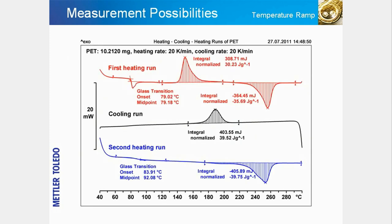Most DSC measurements are performed dynamically using a linear temperature ramp, where the sample is heated or cooled at a constant rate and the different states are measured as a function of temperature. The DSC curves in the slide show typical temperature scans of a sample of amorphous polyethylene terephthalate, or PET. The red curve shows the first heating run. The first event is the glass transition, seen as a step in the curve, followed by an exothermic cold crystallization peak and an endothermic melting peak.